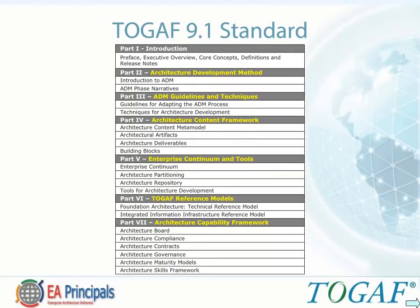Here is a brief overview of the TOGAF 9.1 standard table of contents. Part 1 is the introduction, including the preface, executive overview, core concepts, definitions, and release notes. Part 2 covers the Architecture Development Method (ADM), including an introduction to the ADM and the ADM phase narratives. Part 3 is ADM Guidelines and Techniques, including guidelines for adapting the ADM process and techniques for architecture development. Part 4 covers the Architecture Content Framework, including the architecture content meta model, architectural artifacts, architecture deliverables, and building blocks.